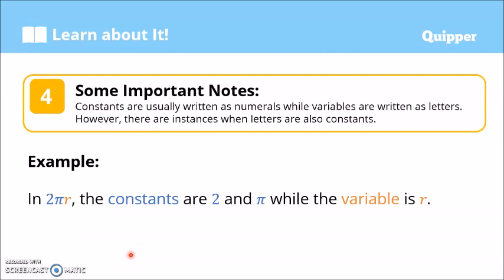Some important notes to remember: constants are usually written as numerals while variables are usually letters. However, there are instances when letters are also used as constants. For example, in 2πr, pi is a Greek letter but it is a constant because it has a fixed value of approximately 3.14 — it is an irrational non-terminating, non-repeating decimal. So in 2πr, the constants are 2 and π, while r is the variable.